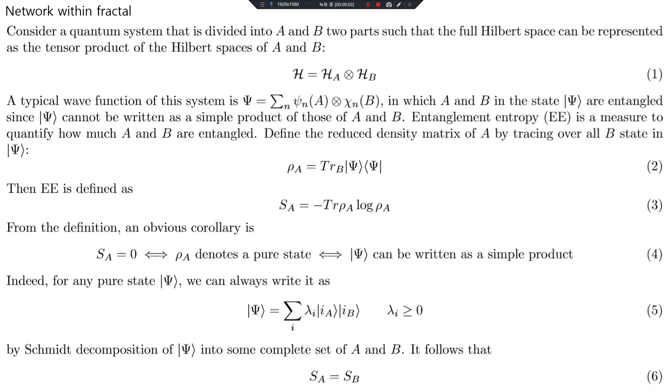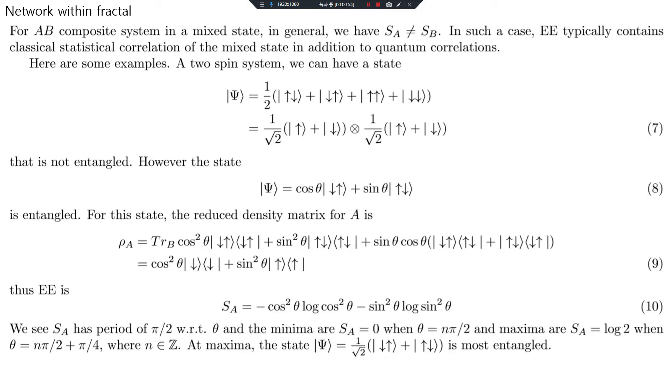Network within Fractal: Consider a quantum system divided into A and B such that the full Hilbert space is the tensor product of A and B. A typical wave function is |ψ⟩ where A and B are entangled. Entanglement entropy quantifies how much A and B are entangled. For AB composite system in a mixed state, entanglement entropy typically contains classical statistical correlations in addition to quantum correlations.